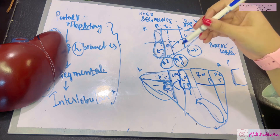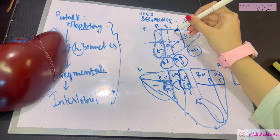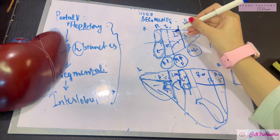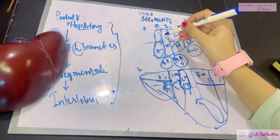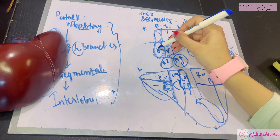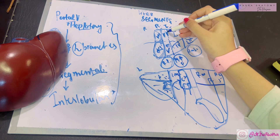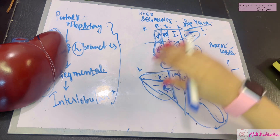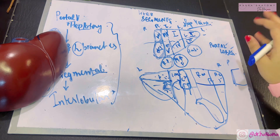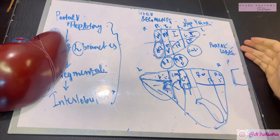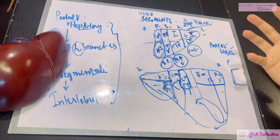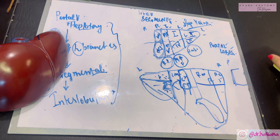Overall, these segments can be named using Roman numerals: starting from the left side, one, two, three, four, and then five, six, seven, eight. That was all you needed to know about hepatic segmentation. I really hope the concept of portal lobes and segmentectomy — which surgeons carry out — makes sense to you. Don't forget to subscribe to my channel, and thank you so much for watching.